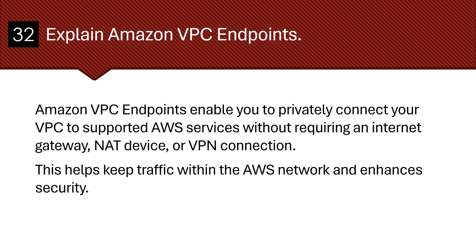Explain Amazon VPC Endpoints. Amazon VPC Endpoints enable you to privately connect your VPC to supported AWS services without requiring any internet gateway, NAT device, or VPN connection. This helps keep traffic within the AWS network and enhances security.